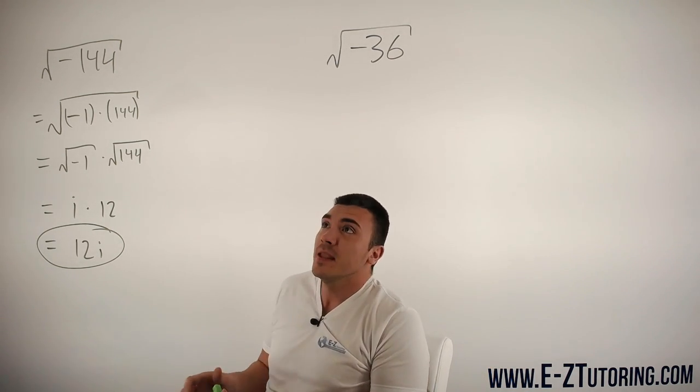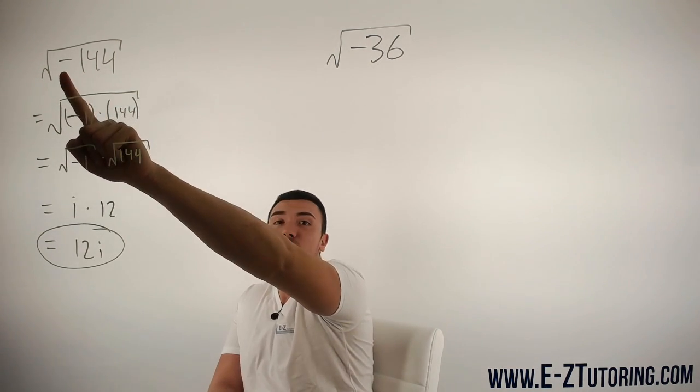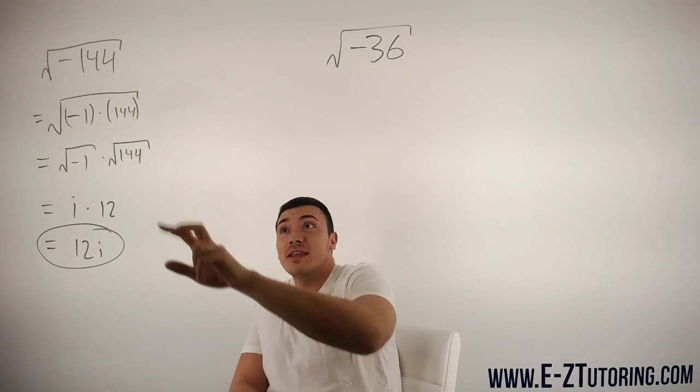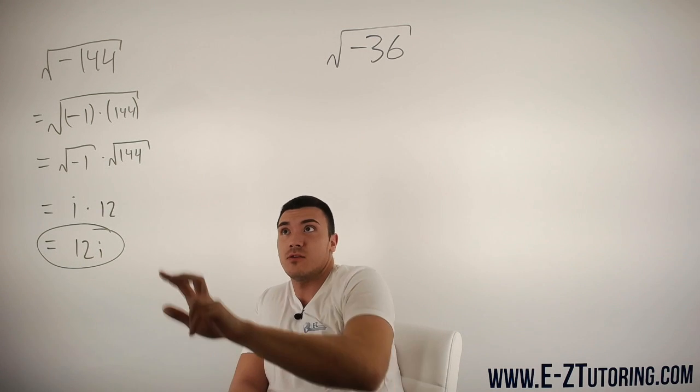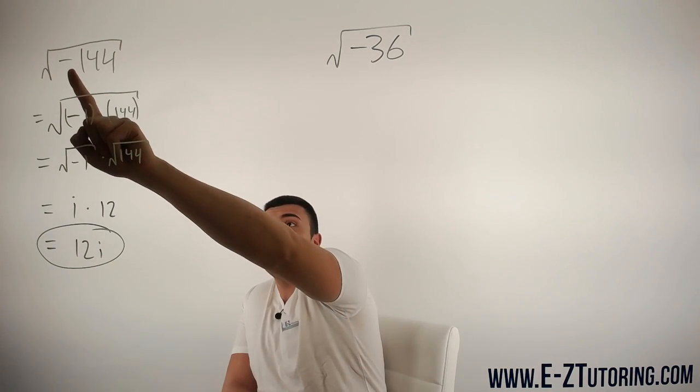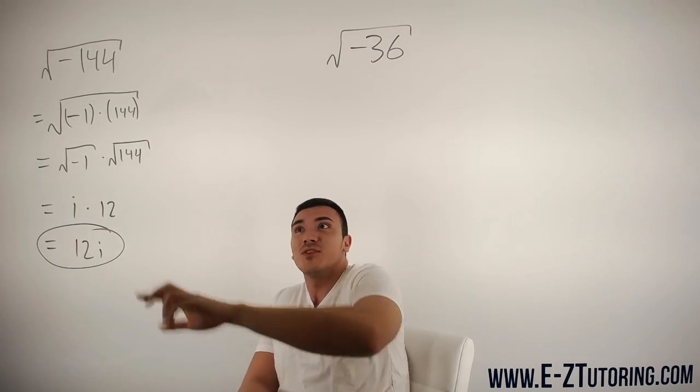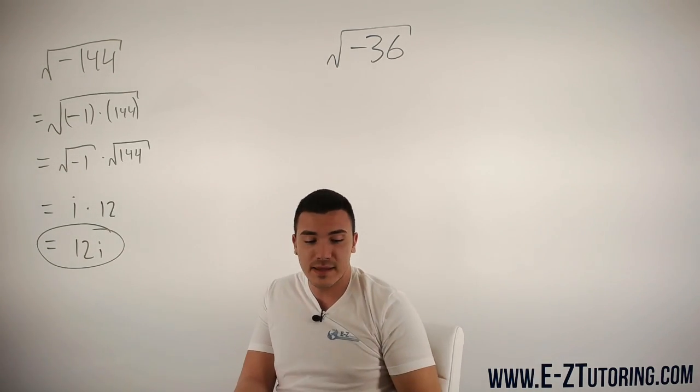In the future, whenever you see a negative inside the square root, I suggest taking the square root normally - the square root of 144 is just 12 - and then since it was negative inside the square root, you just add an i at the end. You can go from here to here in one step.